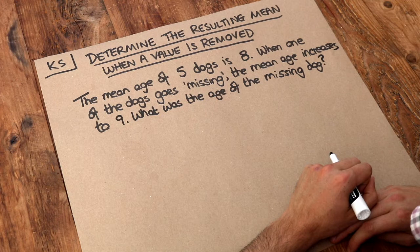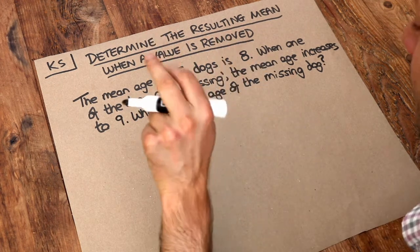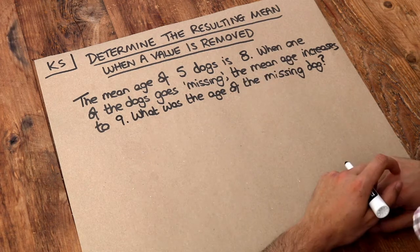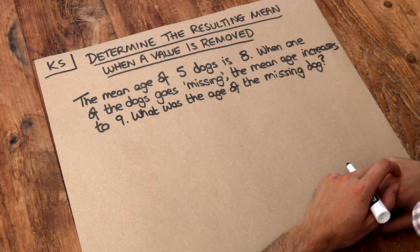The mean age of five dogs is eight. When one of the dogs goes missing, the mean age increases to nine of the remaining dogs. What was the age of the missing dog?